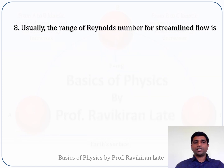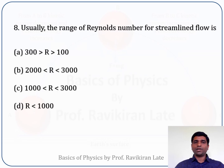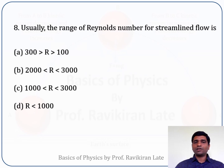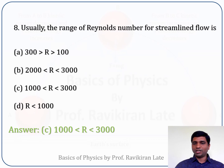Question 8: the usual range of Reynolds number for streamlined flow. From theory, Reynolds numbers for streamlined flow lie between 1000 and 3000. So option C is correct: 1000 < R < 3000.